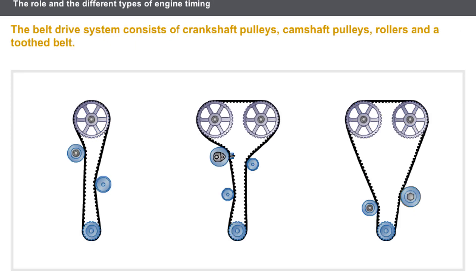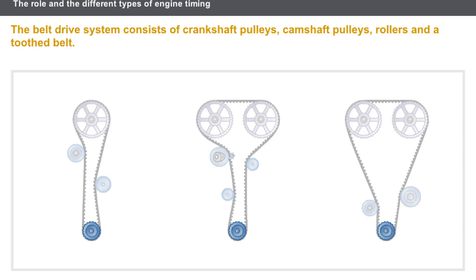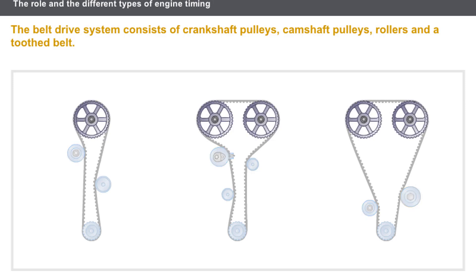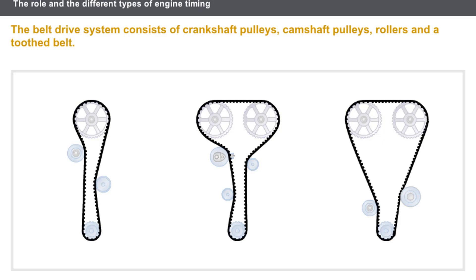Now let's take a look at the belt drive in more detail. The timing consists of a sprocket driven by the crankshaft, one or more fixed rollers, a tensioning roller, one or more toothed camshaft pulleys, and a toothed belt.